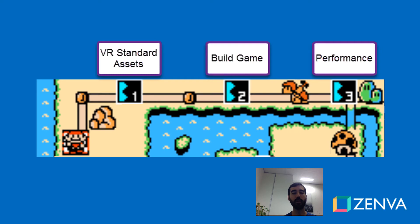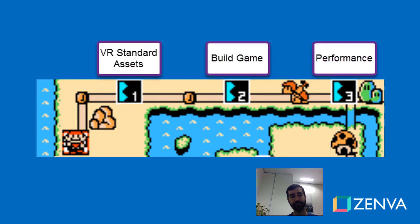Now how is this course structured? At the very beginning we'll look at our game design document. We'll create a game design document for our game so that we have a clear idea of what we're building. Then we're going to dive into the VR standard assets and look at what's available there for us to use. Then we'll build the actual game and at the end of the course we'll have a discussion around performance and do some tweaking as well.